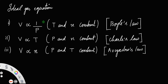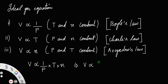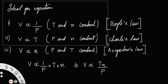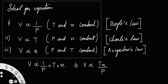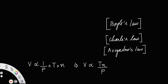Combining these three laws, you can write: the volume of a gas is proportional to — inversely proportional to pressure, that is V ∝ 1/P — times T into n. You can write V ∝ Tn/P. In order to remove the proportionality, you must multiply with a constant R, giving V = RnT/P.